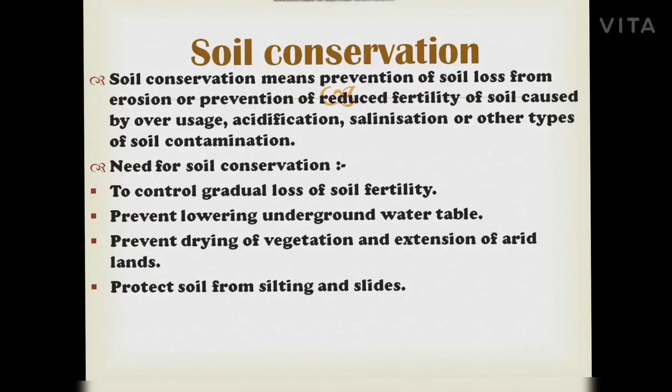Soil conservation means prevention of soil loss from erosion and prevention of reduced fertility caused by over-usage, acidification, salinization, and other types of soil contamination. The need for soil conservation includes controlling gradual loss of soil fertility, preventing lowering of the underground water table, preventing drying of vegetation, and extension of arid lands, as well as protecting soil from silting and landslides.